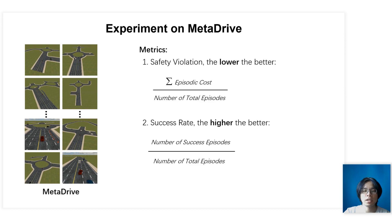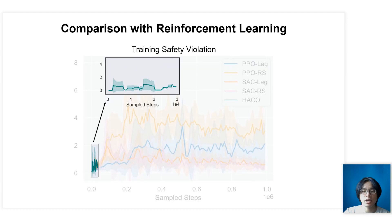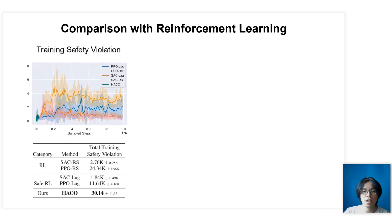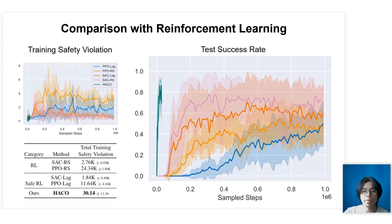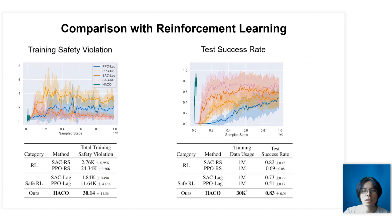We first show the comparison of HACO with RL and Safe RL algorithms in terms of training-time safety. HACO has the lowest average safety violation rate and lowest total safety violation. When tested on unseen maps, HACO also outperforms all baselines in success rate. It achieves the highest success rate with only 30,000 transitions, which is two orders of magnitude lower than other baselines.